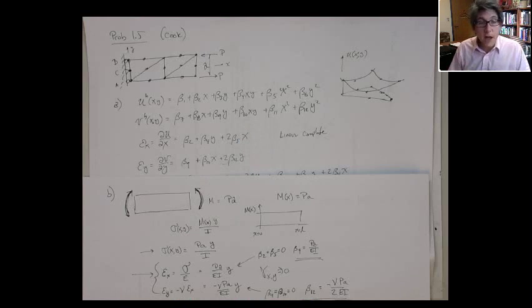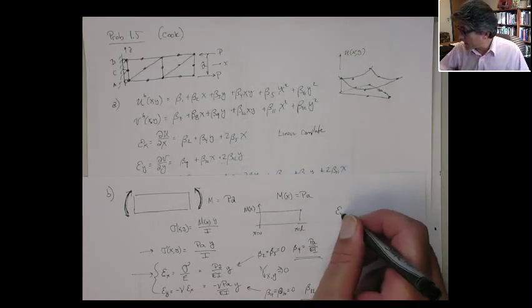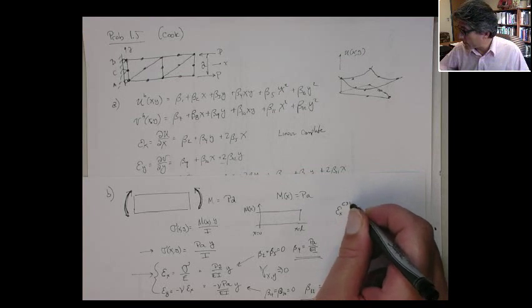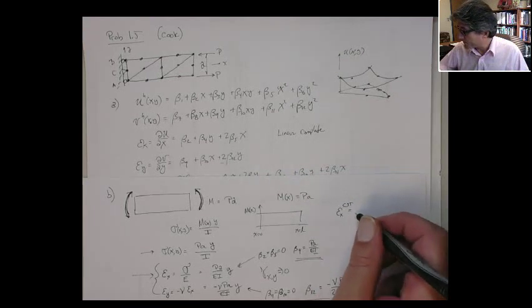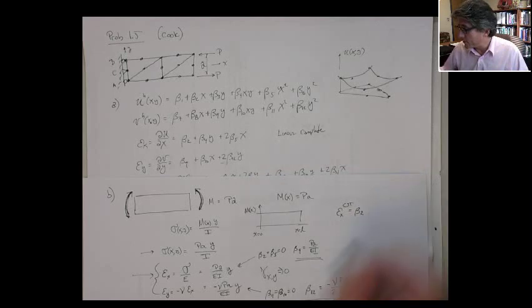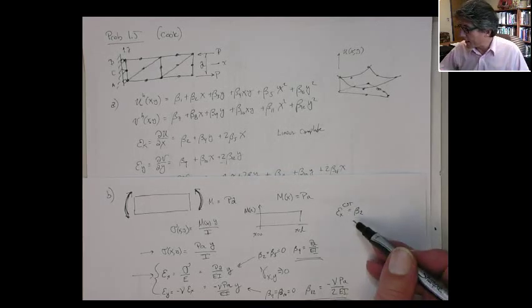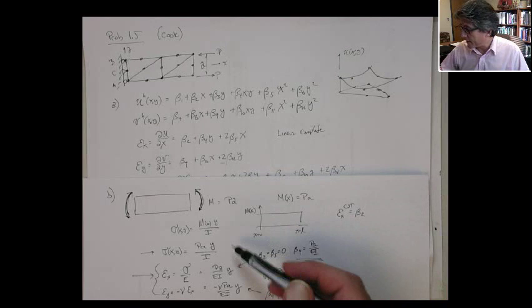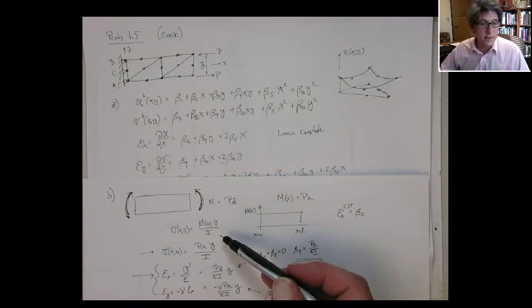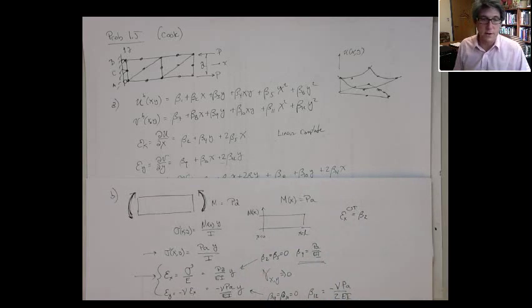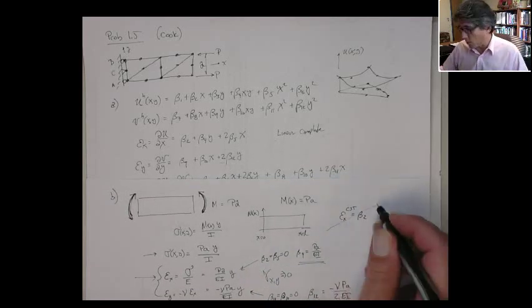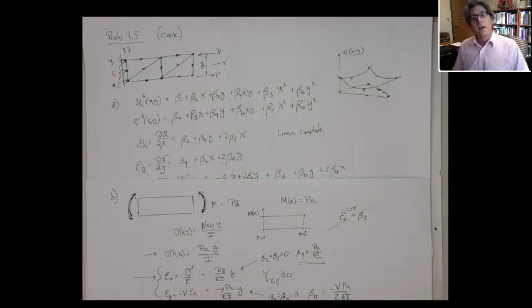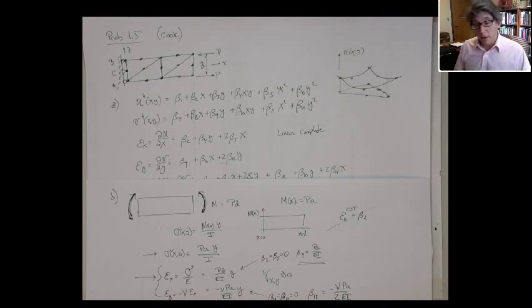They're mostly focused in this problem on trying to reproduce these bending stresses and strains. And in that situation, this element should do a reasonable job on that. If I go and look at this, to be of this form, I could get this by getting beta 2 equal to beta 5 equal to zero, and beta 4 equal to PA on EI. Now I can get this, let's look at the Y strain.